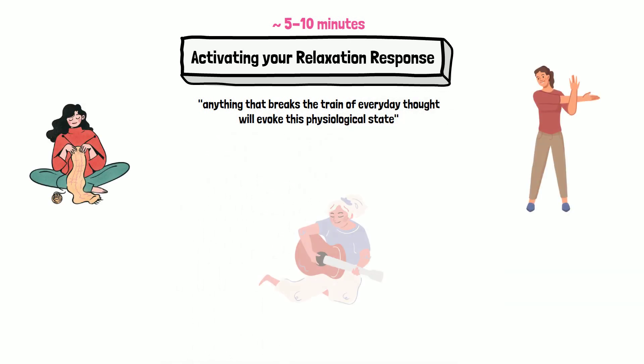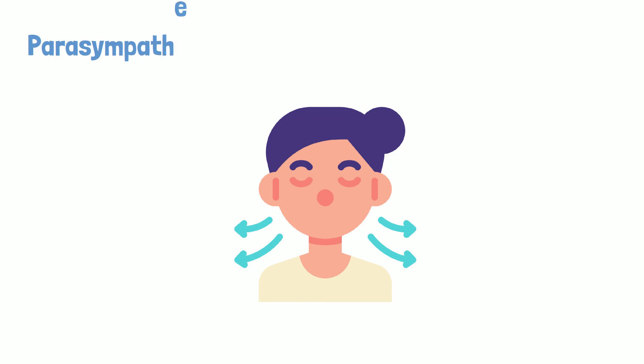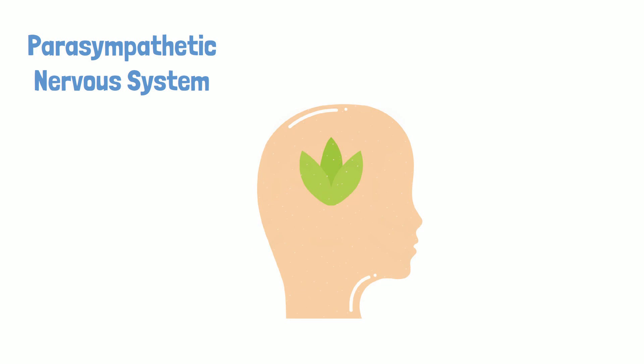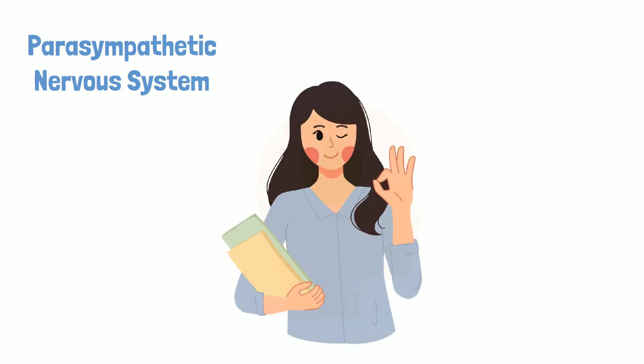Engaging in an activity that makes you lose track of time is indicative of the relaxation response. Deep breathing, for example, activates the parasympathetic nervous system, which decreases heart rate, dilates your blood vessels, and lowers blood pressure. The brain associates slow breathing with relaxation, helping us calm down and refocus.